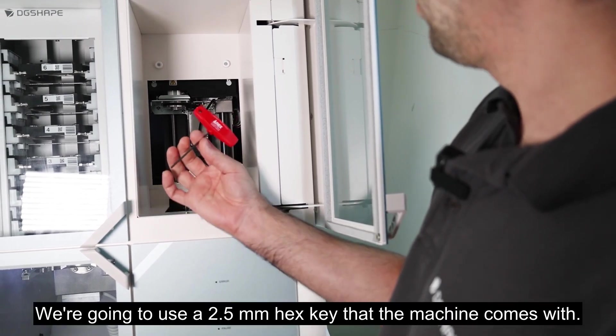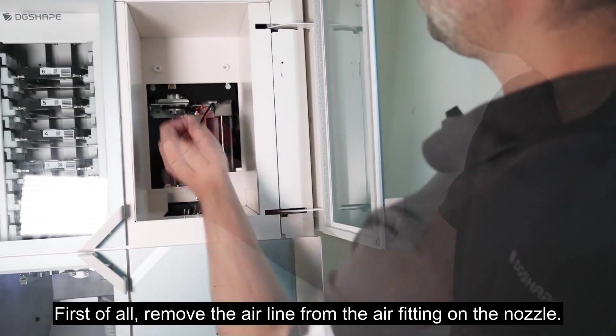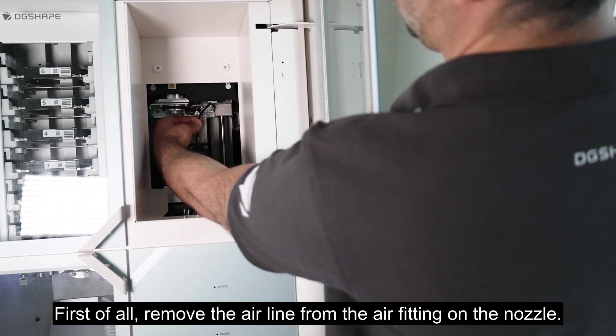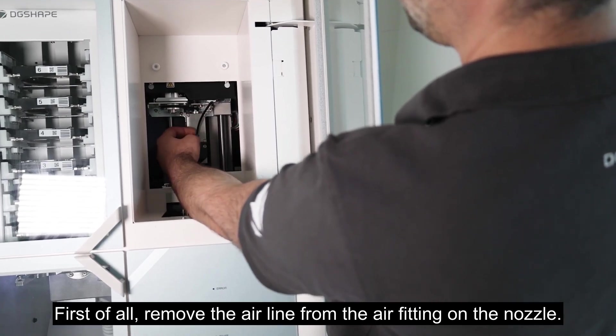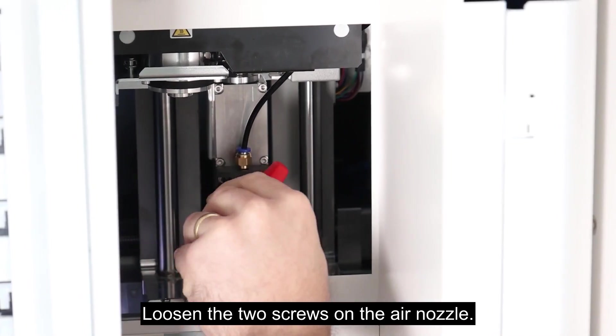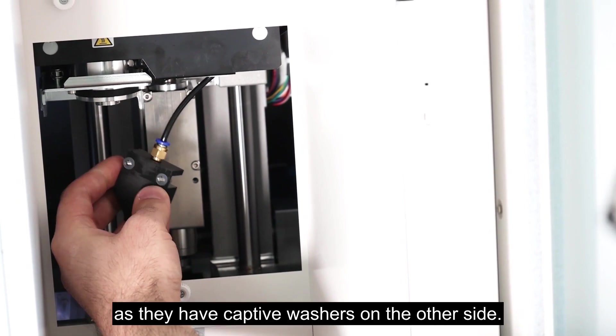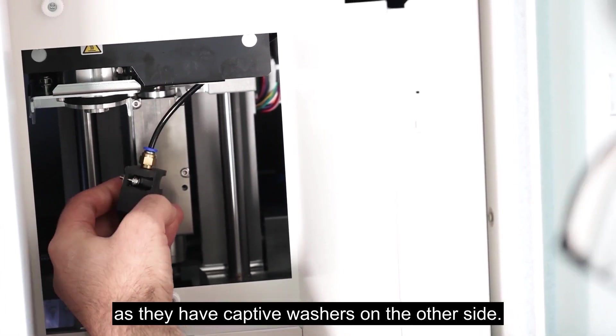We're going to use our 2.5 millimeter hex key that the machine comes with. First of all, remove the air line from the air fitting on the nozzle. Loosen the two screws on the air nozzle. The screws are not removed completely from the nozzle, as they have captive washers on the other side.